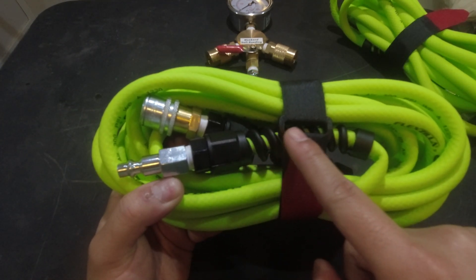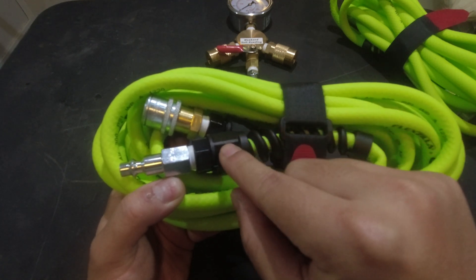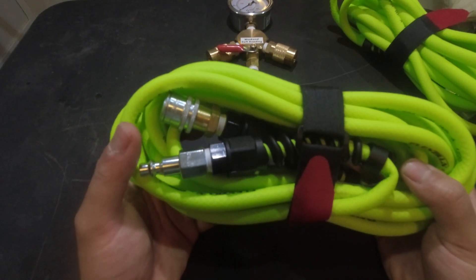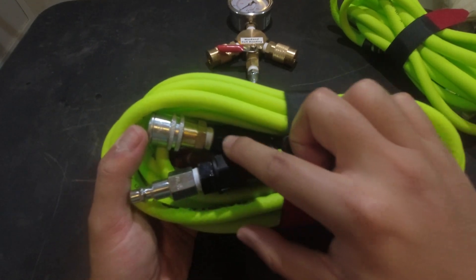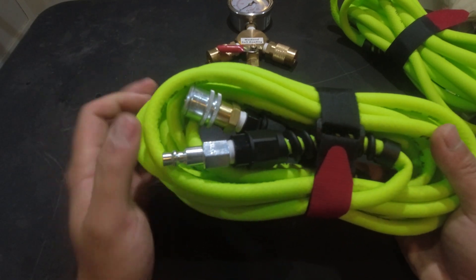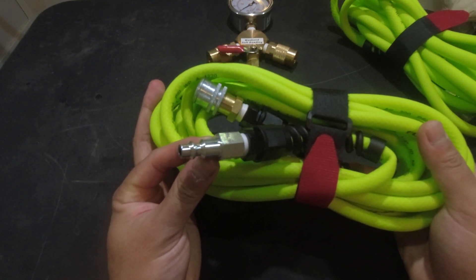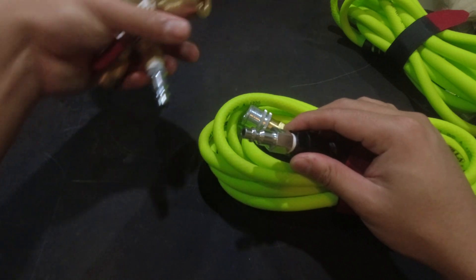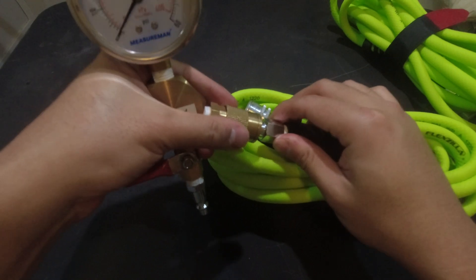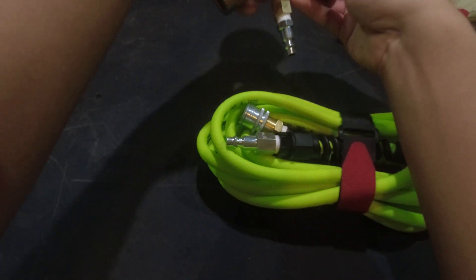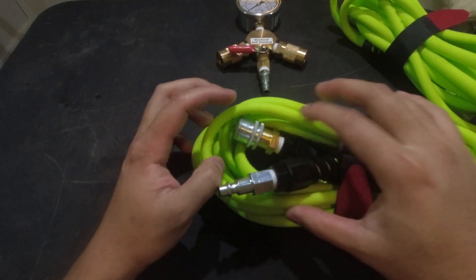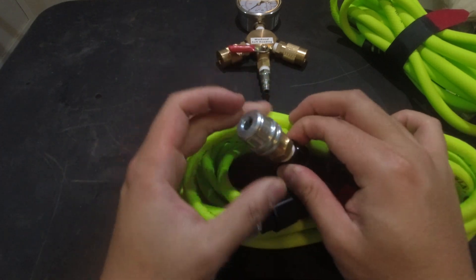This plastic part that runs through here to prevent kinking at the end comes with it, however I did need to buy another pair since I'm doing two hoses. On the hose there's another coupler to attach to the air. You just pop it in and now it's secure. To uncouple it you just pull the collar back.